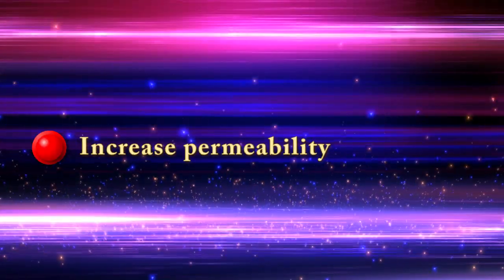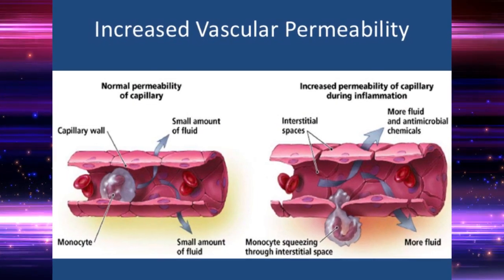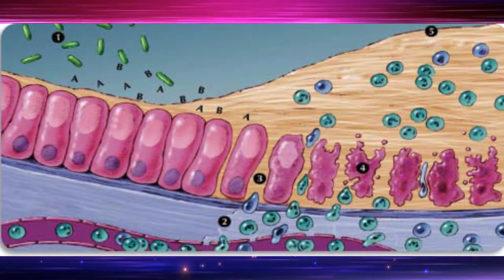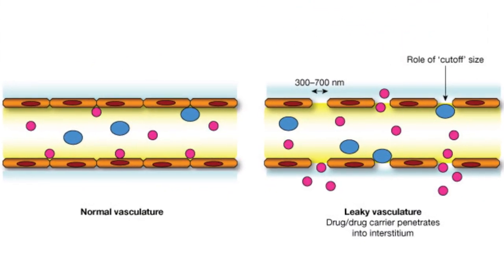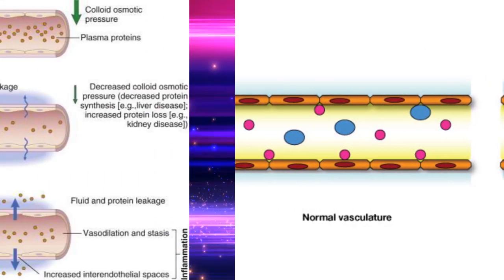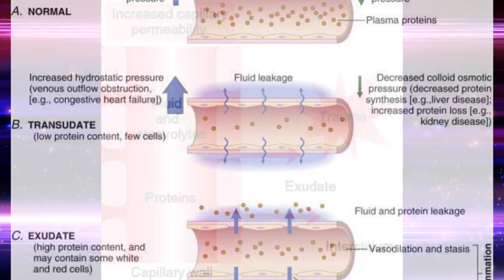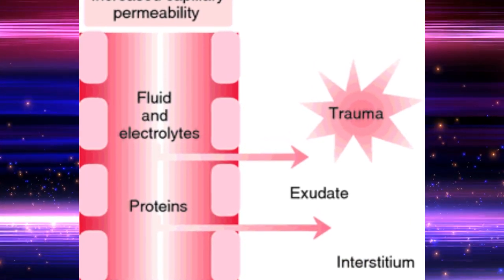Increased vascular permeability leads to the movement of protein-rich fluid and even blood cells into the extravascular tissues. Therefore, this increases the osmotic pressure of the interstitial fluid. The result is outflow of more water from blood to tissues. This protein-rich accumulation is called exudate.